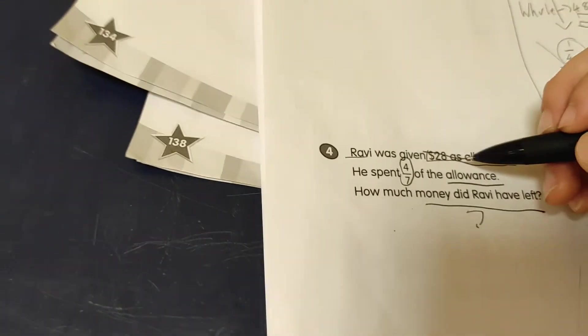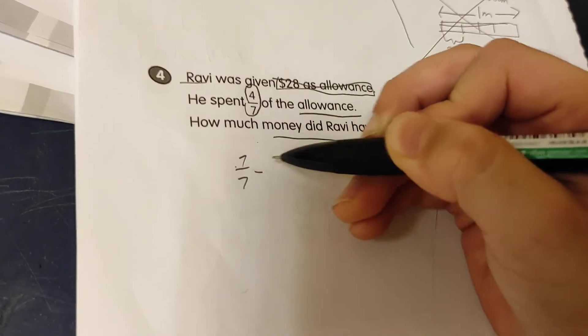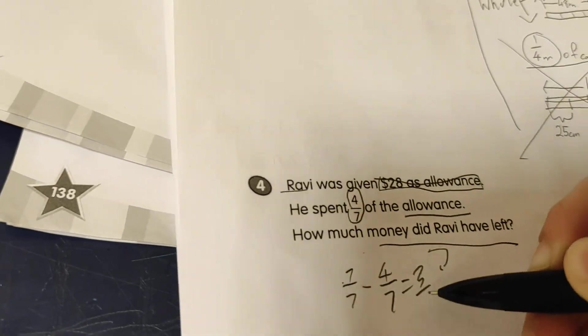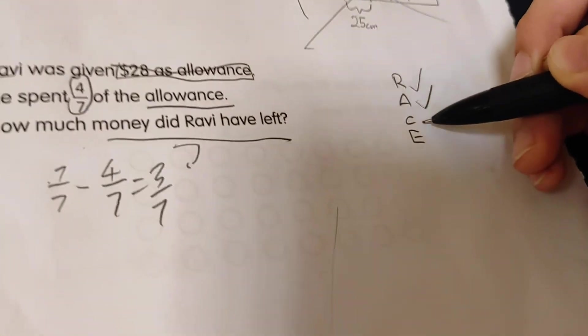Okay, now C. We have to choose a method. Let's choose a method. Since $28 is the total, we must change it into fraction. So 7 out of 7 must minus 4 out of 7 equals 3 out of 7. Since we have to choose a method.